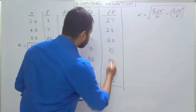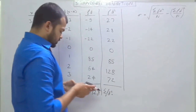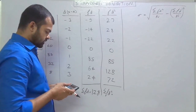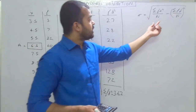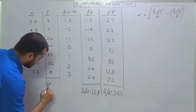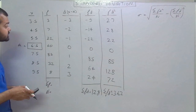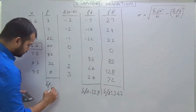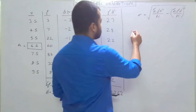Now we obtain the total of the fd² column — summation fd². Adding 27 + 28 + 22 + 0 + 85 + 128 + 72, the figure comes out as 362. So summation fd² = 362. In discrete series, n equals summation f, the total of the frequency column: 3 + 7 + 22 + 60 + 85 + 32 + 8 = 217. So n = 217.